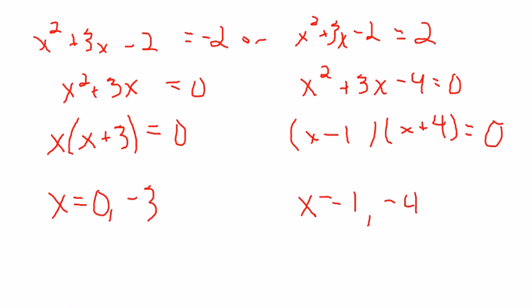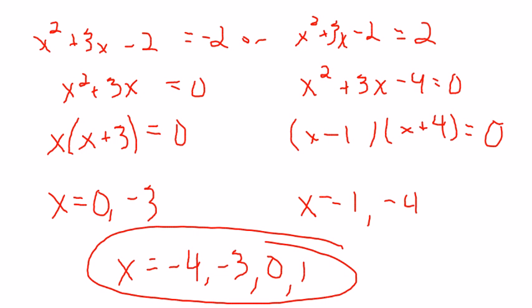You could give me the answer like that. It might be a little bit better to say x could be negative 4, and I'm starting with the lowest. It could be negative 3. It could be 0. Or it could be 1. And then circle them all together.